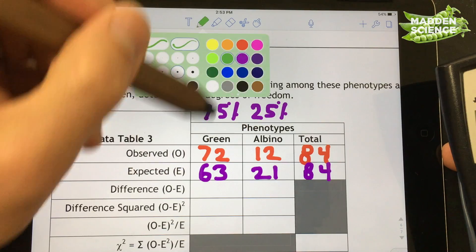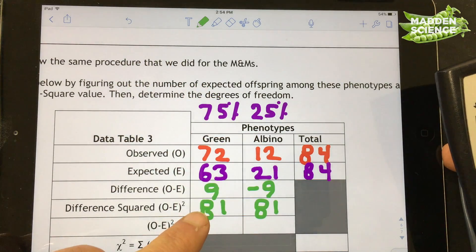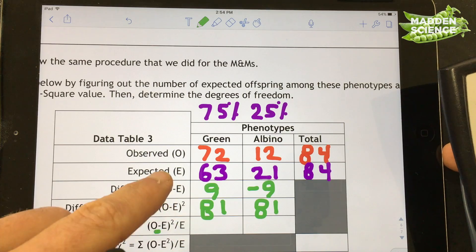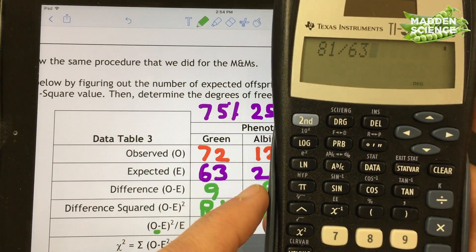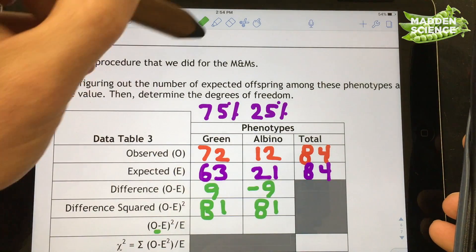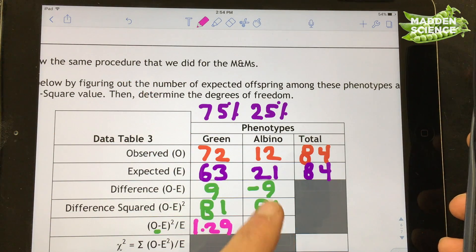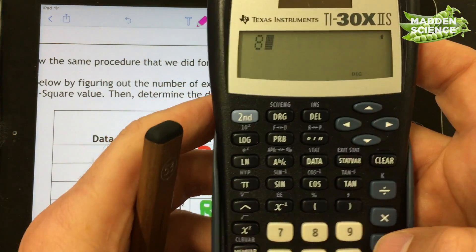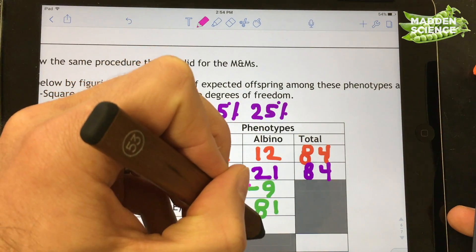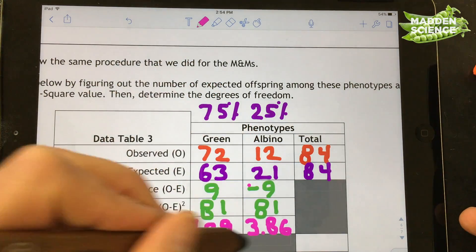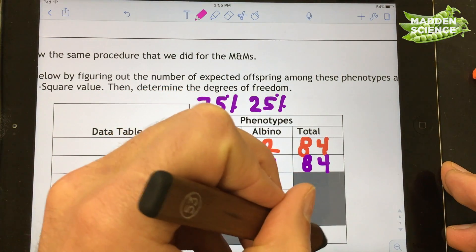Now when we're looking to figure out what our expected is, we're going to have the same total number and then the expected is going to be figured out using our numbers from earlier. Knowing that the green is meant to be 75 percent and the albino is meant to be 25 percent. So throw out a calculator in here and you got 84 times 75 percent or 0.75. It's going to equal 63. 63 is going to go in here. And 84 times 0.25, which is 21. From there we can note our differences. Both of those squared equal 81. And we're taking 81, or observed minus expected, that's squared, divided by the expected. We can clear that out and say 81 divided by 63 equals 1.29.